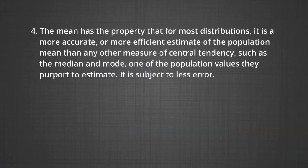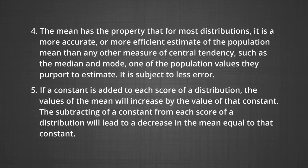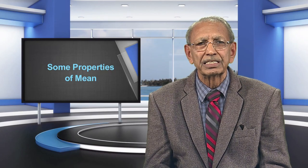Number 4: the mean has the property that for most distributions it is a more accurate or more efficient estimate of the population mean than any other measure of central tendency such as the median and the mode. Number 5: if a constant is added to each score of a distribution, the mean will increase by the value of that constant. Subtracting a constant decreases the mean by that constant. Multiplication and division lead to the product of the mean and the constant, or the quotient obtained by dividing the mean by the constant, respectively.